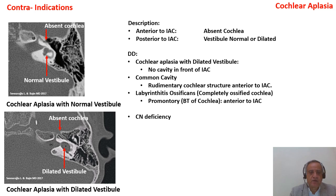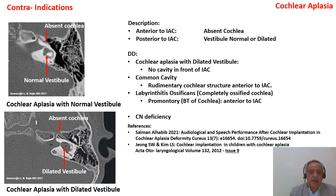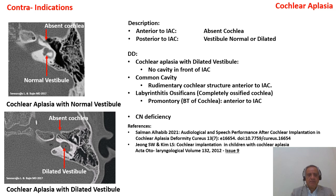There is a possibility of cochlear nerve deficiency in cochlear aplasia. Until recently this was considered an absolute contraindication, but there are now papers reporting implantation into the vestibule with some results. It is worth trying CI before ABI, because cochlear implant results can be better than ABI in some cases.